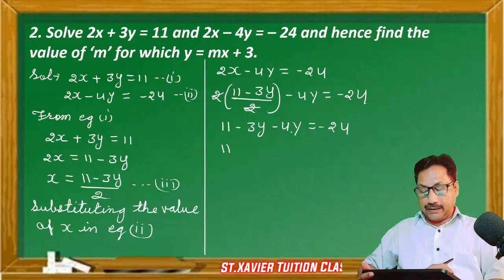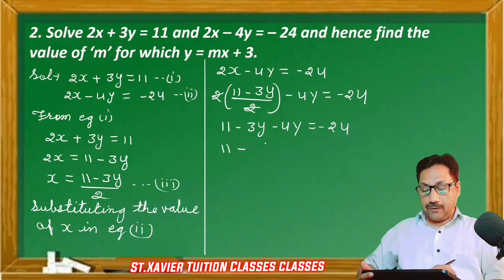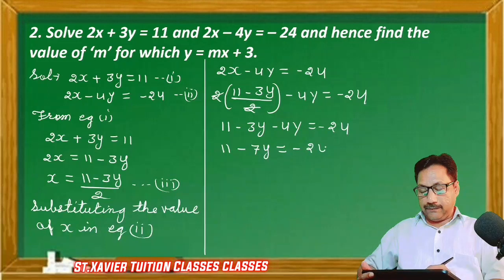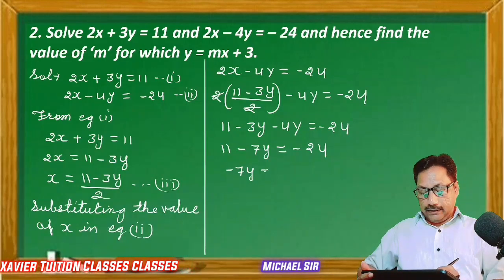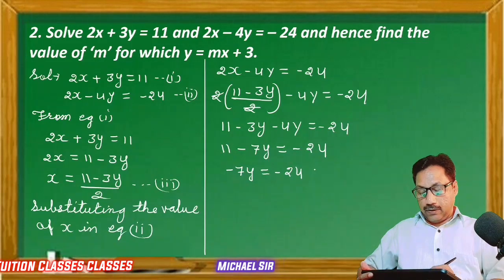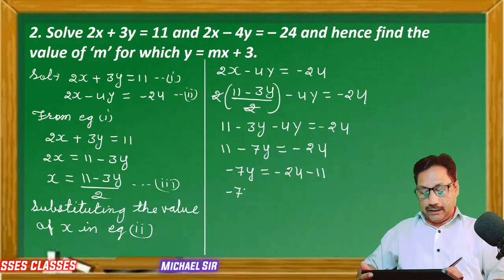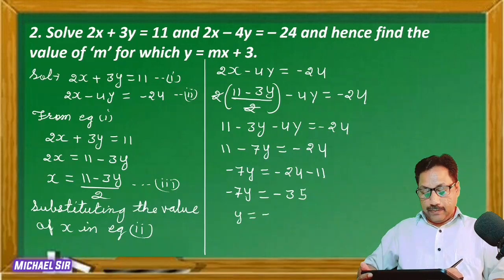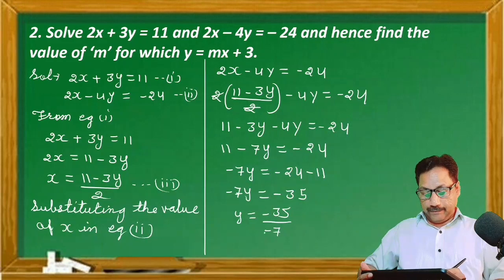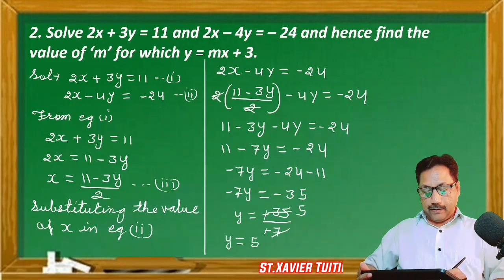Now combining like terms: -3y - 4y gives -7y. So 11 - 7y = -24. Sending 11 to the right-hand side: -7y = -24 - 11, which gives -7y = -35. Dividing both sides: y = -35 / -7. The negatives cancel, giving y = 5.